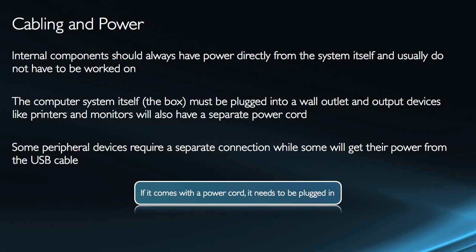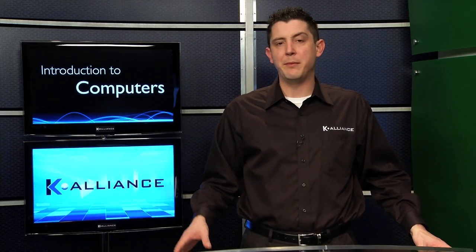Be very careful if you're opening up the system. The computer system itself, the box, needs to be plugged into the wall, and then output devices like printers and monitors will have a separate power cord. Some devices can get their power through the USB connection, and the rule of thumb remains: if it has a power cord, it needs to be plugged in. Unless you are building a computer yourself, you're not going to have to mess with the power connections on the internal components — they're going to be plugged in. It is possible for those power supplies and cables to go bad, but that should be several years down the road if you were still using the same computer.